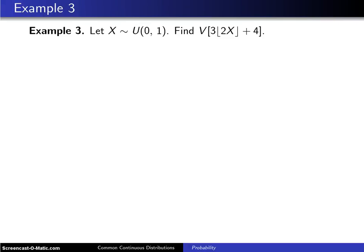Here's another example that concerns the uniform distribution. Let X be a uniform random variable between 0 and 1. Find the variance of 3 times the floor of 2 times X plus 4.